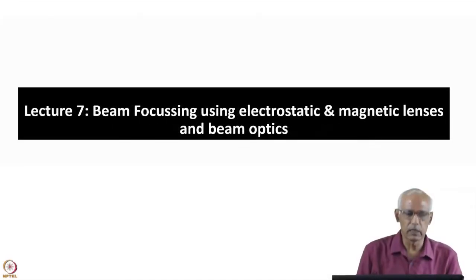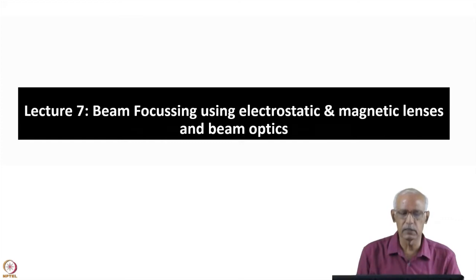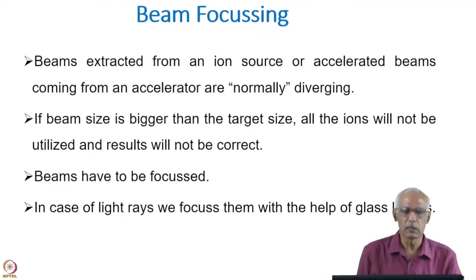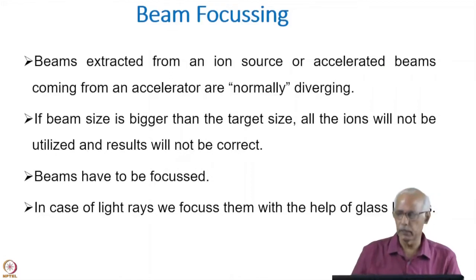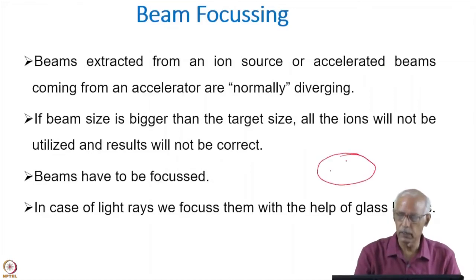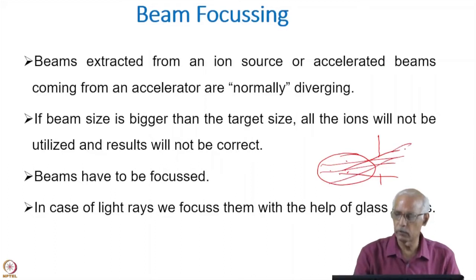Today we are going to discuss Lecture 7, where we will be discussing a very important aspect of accelerators, that is beam focusing. This beam focusing is required for all experiments. The beam extracted from an ion source or even accelerated from an accelerating tube is normally diverging. If you take the ion source, there is a plasma and an extraction voltage, then the beam will be very diverging.